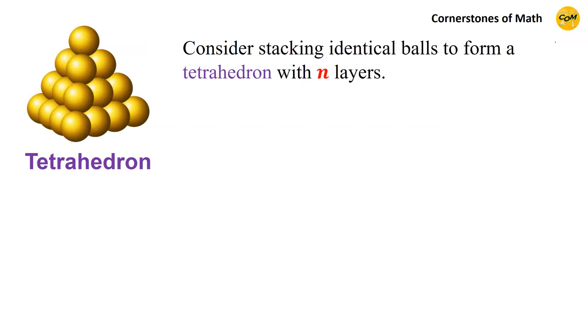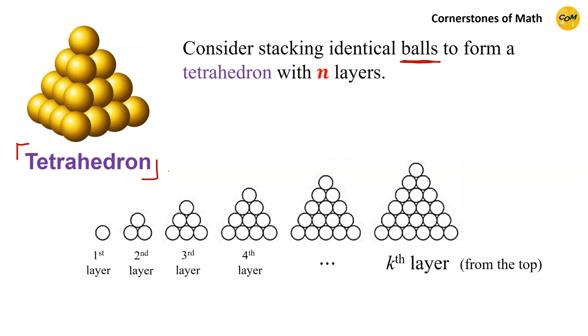Hello and welcome to yet another video of Cornerstones of Math. In this video, we are going to count some balls. More specifically, we construct a tetrahedron by stacking solid identically shaped balls. This can be done if we stack the balls in a manner that in the kth layer from the top, the balls are arranged in an equilateral triangle with k balls on each side.